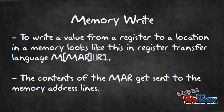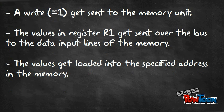Memory write. To write a value from register one to a location in memory, in register transfer language: the contents of the memory address register get sent to the memory address line. A write signal gets sent to the memory unit. The values in register one get sent over the bus to the data input lines of the memory. The values get loaded into the specified address in the memory.